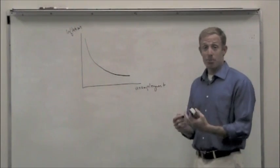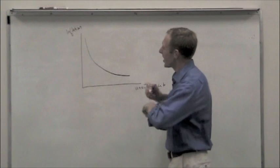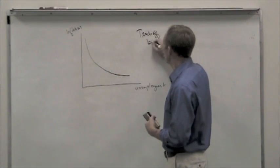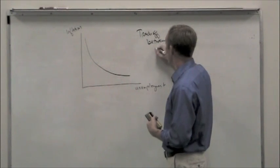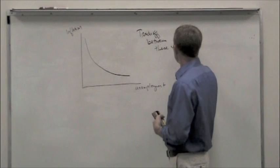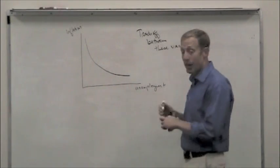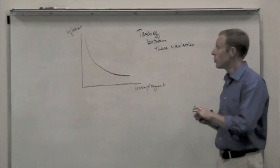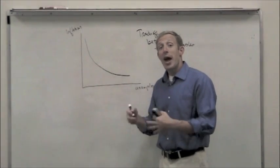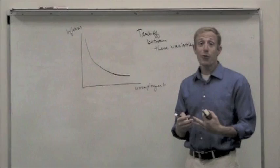Now, the reason this is important is because it signals that there could potentially be a trade-off that can be exploited between these two very important macroeconomic variables. And so, politicians and policymakers could potentially seek to stimulate the economy, accept a little bit of inflation, and in so doing, reduce the amount of unemployment significantly.